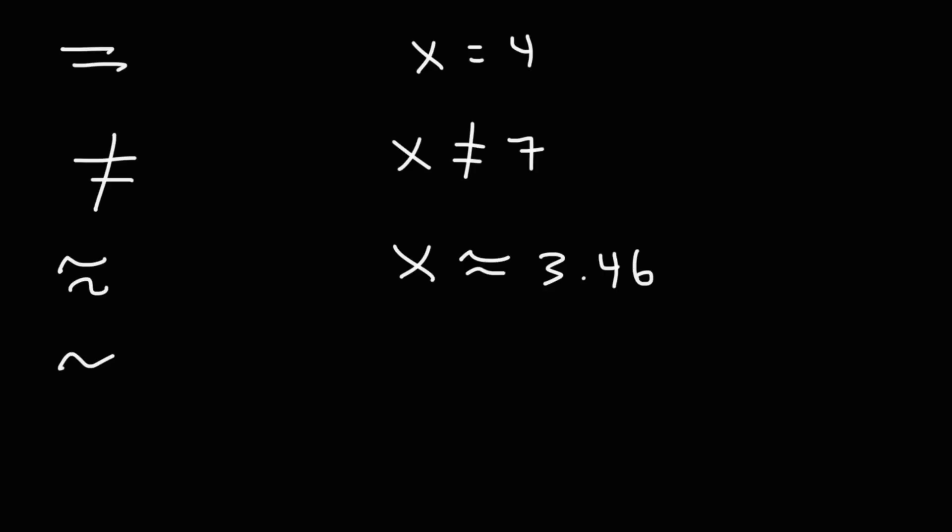Now this symbol means similar, or is associated with similarity. For instance, you could say that triangle ABC is similar to triangle DEF. They could be similar in the sense that they have similar ratios. This symbol means congruent. Triangle ABC could be congruent to triangle DEF.